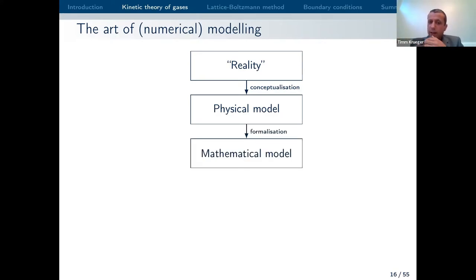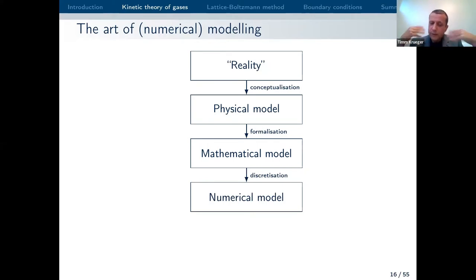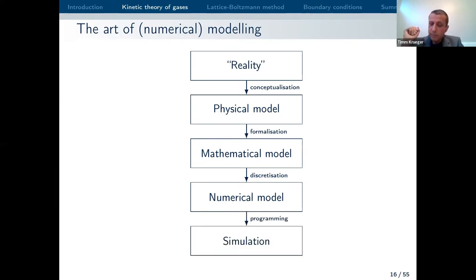The second step is formalization, where you write down the physical model in mathematical form. If you say you're interested in incompressible fluid mechanics, you could write down the incompressible Navier-Stokes equation. Then — and this is all about computer simulations — at some point you have to discretize your equations because your computer will otherwise not understand what's going on. Discretization is a very general word; you have all kinds of different ways to develop a numerical model.